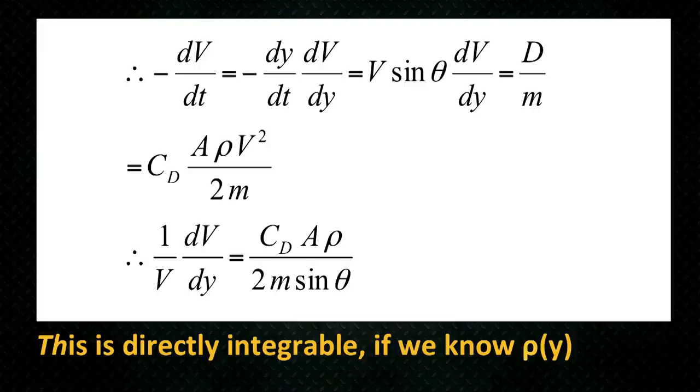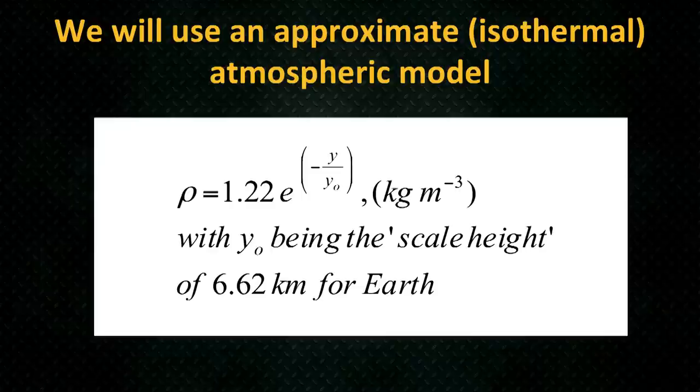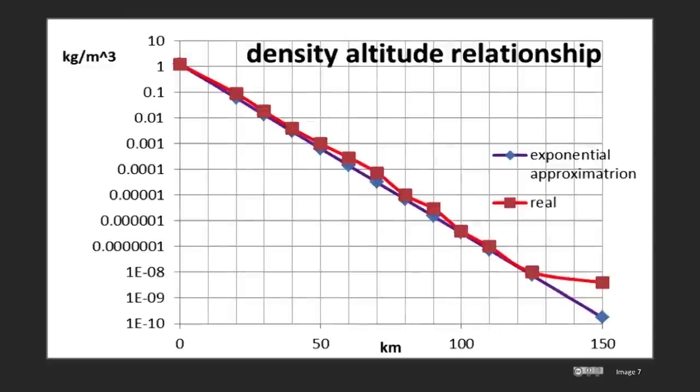We need to know density. Well we do know density to a certain extent, there's the US standard atmosphere, changes every day but we got a rough idea about what it is. The problem with that is you can't get an analytical solution from a solution like a standard atmosphere. So we make an approximation to the atmosphere which is an isothermal model which actually gives us a very simple exponential dependency of density with altitude which enables us to solve the equations approximately but better than nothing.